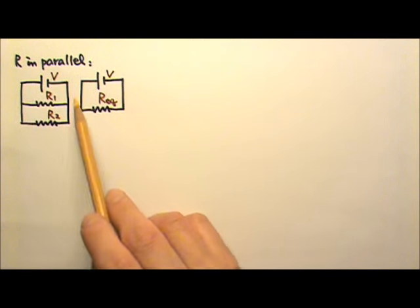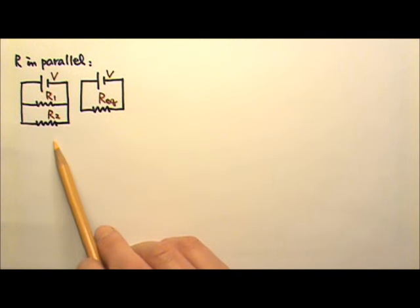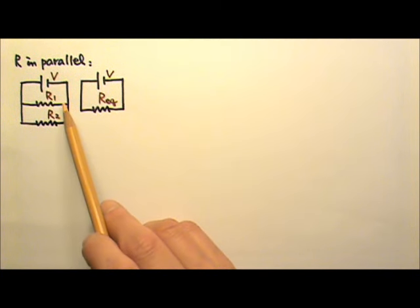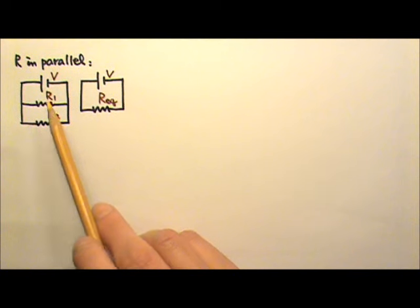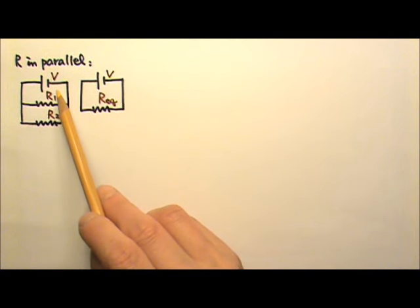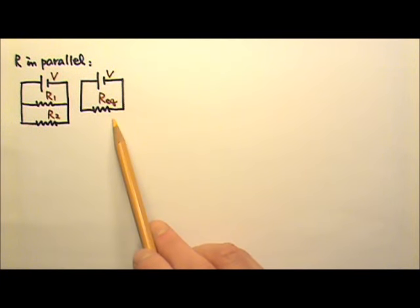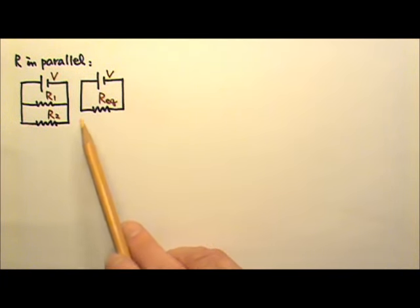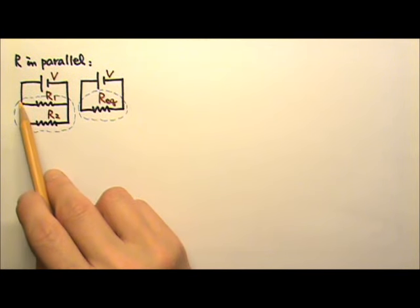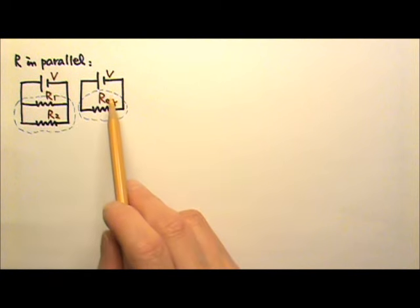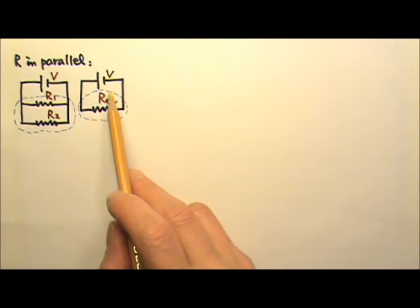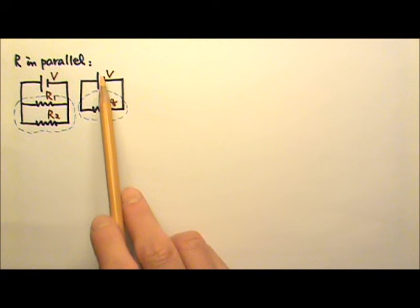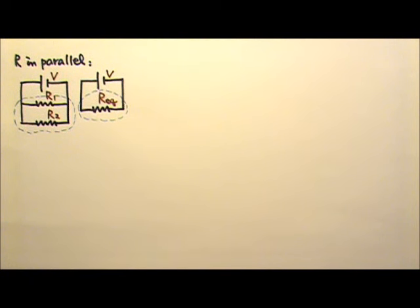Sometimes multiple resistors are used in a circuit. In this case, we have two resistors R1 and R2 in parallel, and they are connected to a battery with voltage V. This one here is the equivalent circuit to that one, which means if I put the two resistors in parallel in a black box, and put this single equivalent resistor in another black box, everything outside the black boxes should look exactly the same.